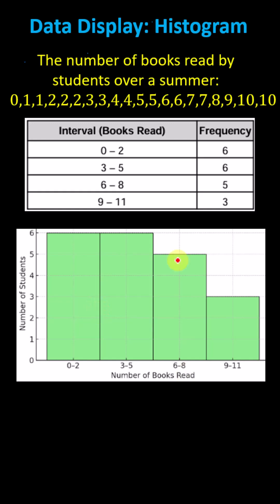For the bins 6 to 8, the frequency is 5. The bar has a height of 5. And for 9 to 11, the frequency is 3. The bar has height 3. And now we have our completed histogram.